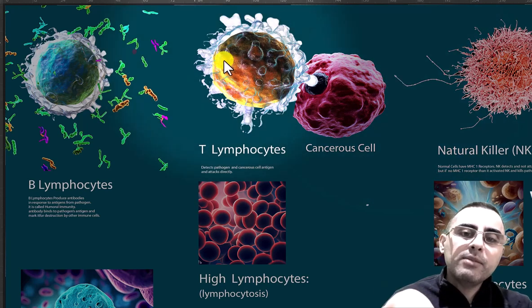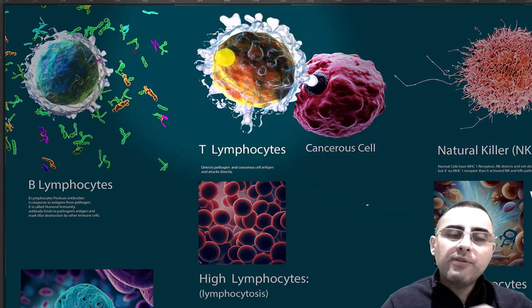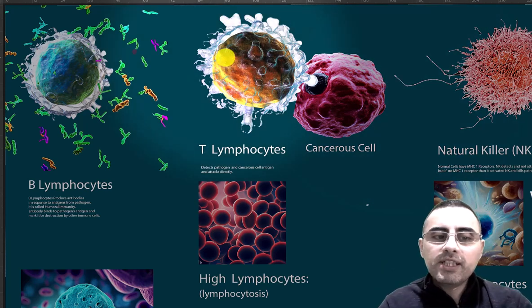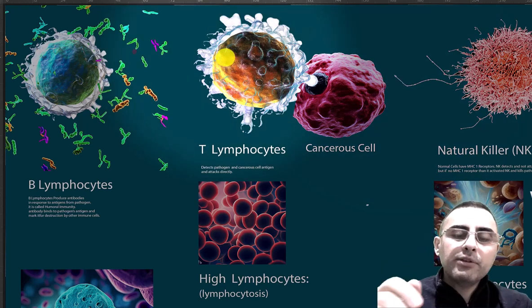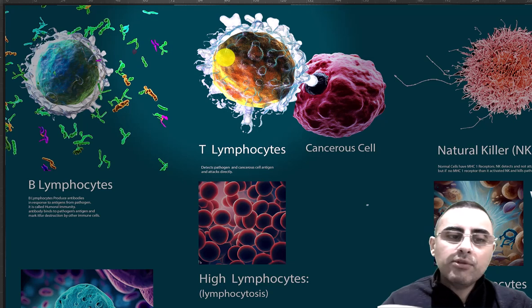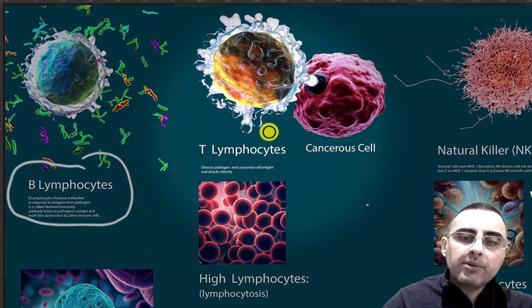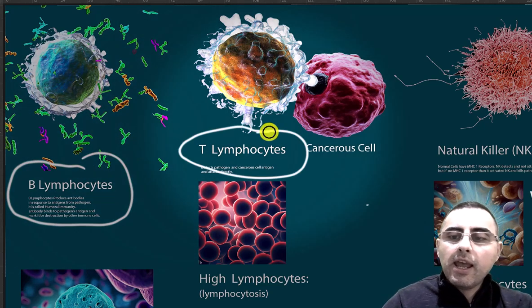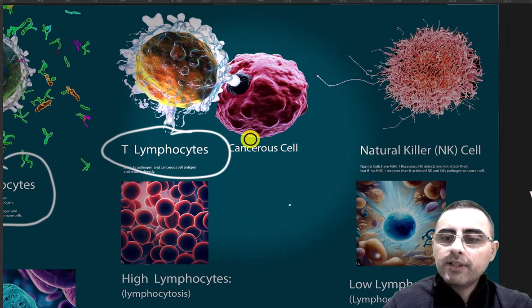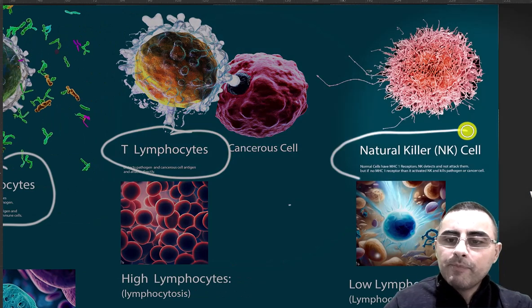Lymphocytes are an important part of our human immune system. We have three major types of lymphocytes: B-lymphocytes, T-lymphocytes, and natural killers, also called NK cells.